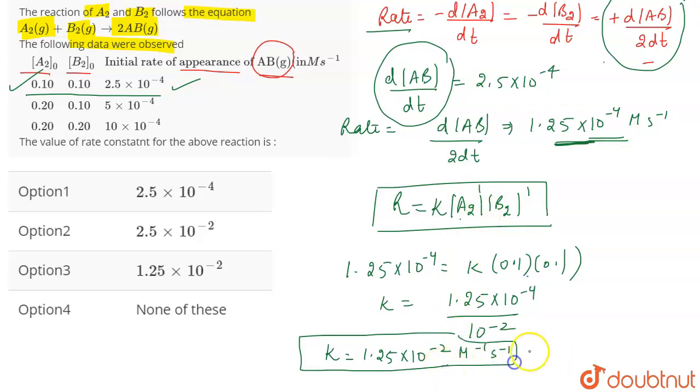This is going to be the unit and this is going to be the value of the rate constant and it is given to you in option number 3. So, option number 3 is the correct answer for the question.